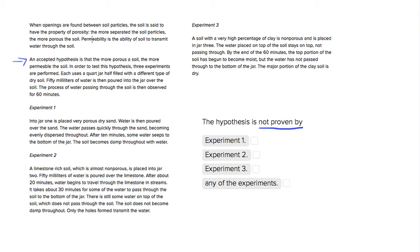So let's look at our hypothesis. The accepted hypothesis is that the more porous the soil, the more permeable the soil. So we want to look at these three different experiments. So in experiment 1,